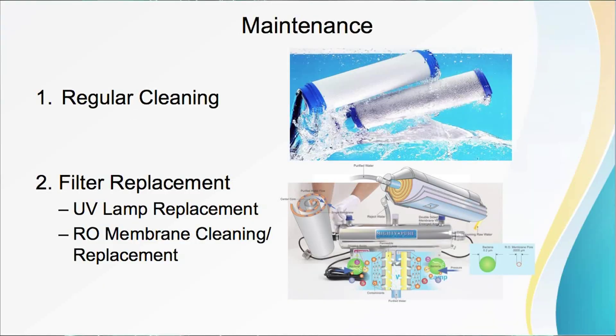Next comes the UV lamp replacement. If your purifier uses ultraviolet purification, replace the UV lamp as per the manufacturer's instructions. It is usually every 6 to 12 months. The worn-out ultraviolet lamp might not effectively kill bacteria and other microorganisms.